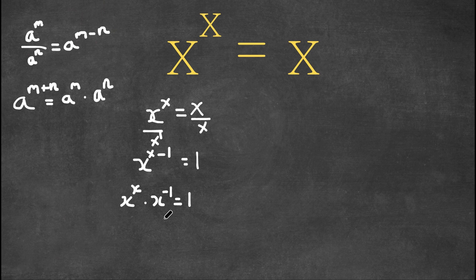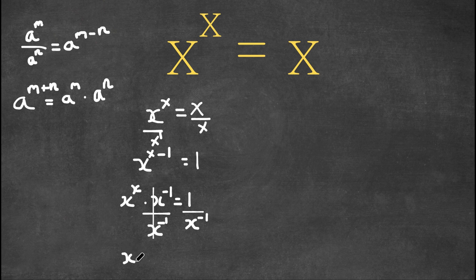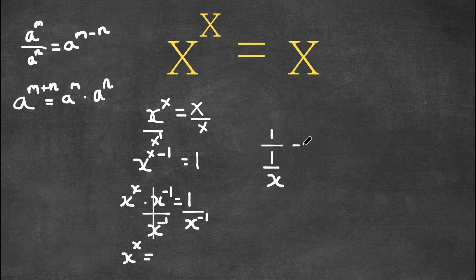And this is still equal to 1. So now, if I divide both sides by x to the power of negative 1, these two would cancel out. I get x to the power of x is equal to 1 over x to the power of negative 1. Now, 1 over x to the power of negative 1 is the same thing as 1 over 1 over x, which is simply equal to x.